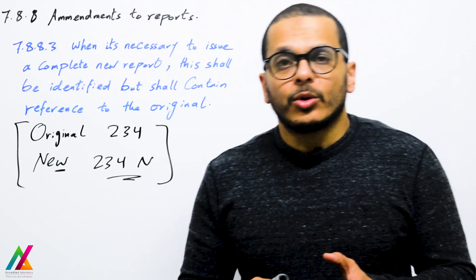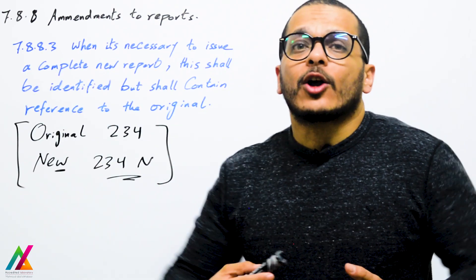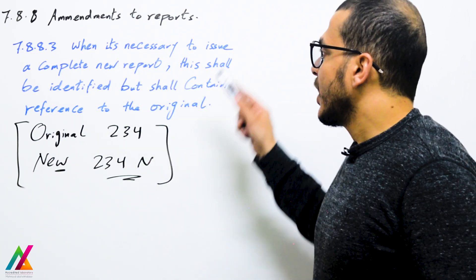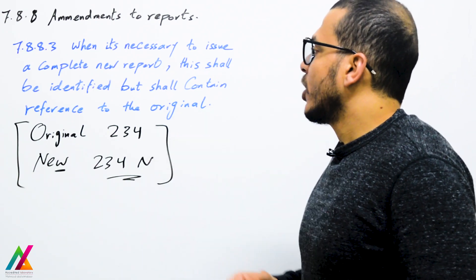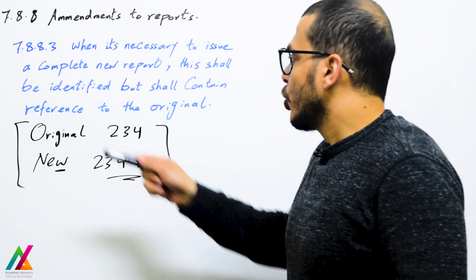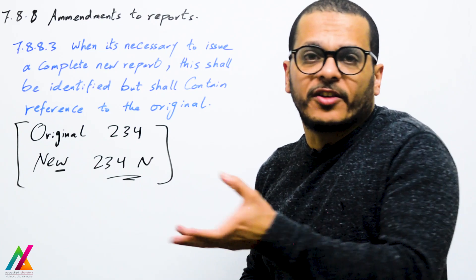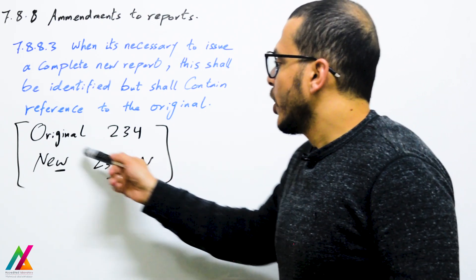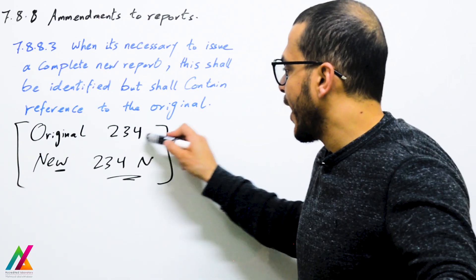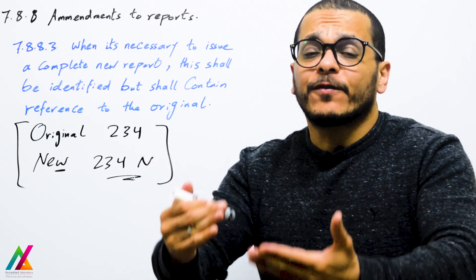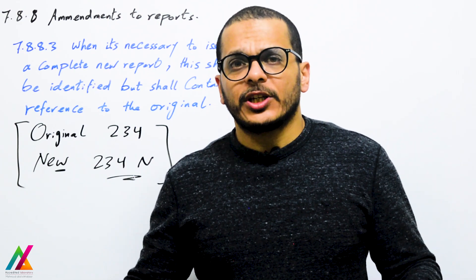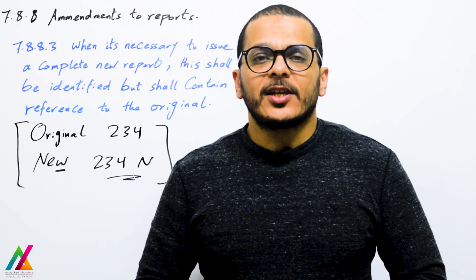When an amendment alone is not enough and a complete new report must be issued, the new report shall be clearly identified and shall contain a reference to the original. For example, if the original report had serial number 234, the new report will also reference that original serial number 234 so there is a clear link to the original report. That was the end of today's lecture and the end of the reporting topic — thank you and see you in the next lecture.